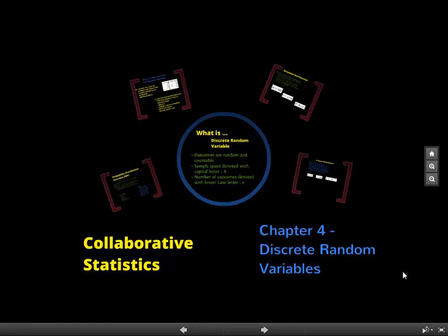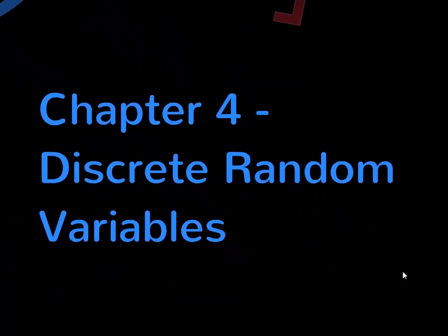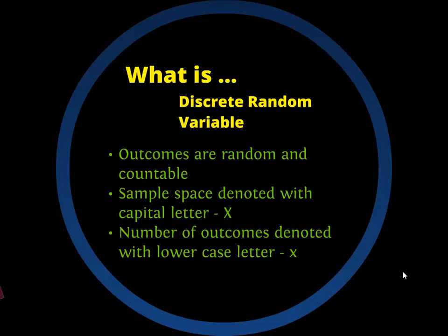Welcome to Collaborative Statistics, Chapter 4, Discrete Random Variables. So discrete random variables are probabilities, but they are countable. We know exactly how many things that we are looking at. We denote the sample space here by a big letter X, and we denote the actual outcomes as a lowercase letter x.